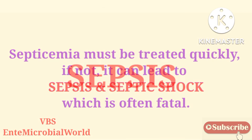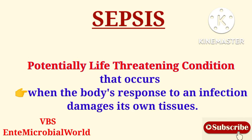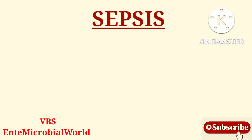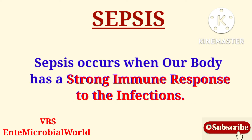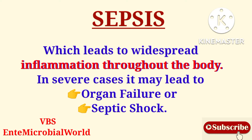What is Sepsis? Sepsis is a potentially life-threatening condition that occurs when the body's response to an infection damages its own tissues. That is, sepsis occurs when our body has a strong immune response to the infection, which leads to widespread inflammation throughout the body. In severe cases, it may lead to organ failure or septic shock.